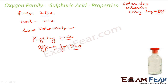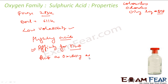It has a strong affinity for water and that's why it is a dehydrating agent. In fact, in the last step of the manufacture of sulfuric acid itself, we are using sulfuric acid to remove water from SO₂, sulfur dioxide gas. And it also acts as an oxidizing agent.